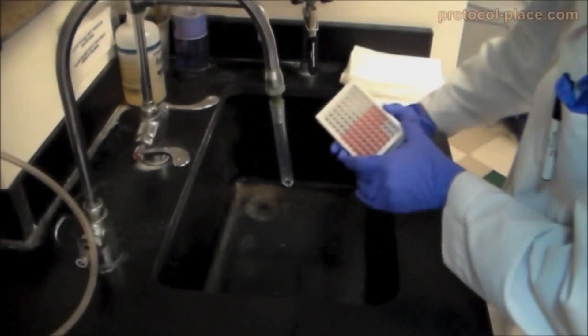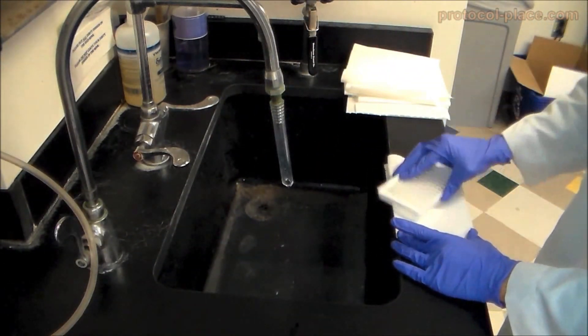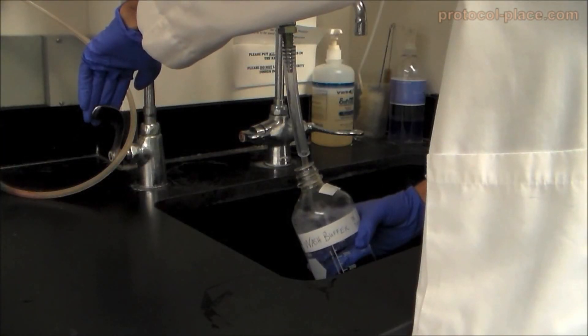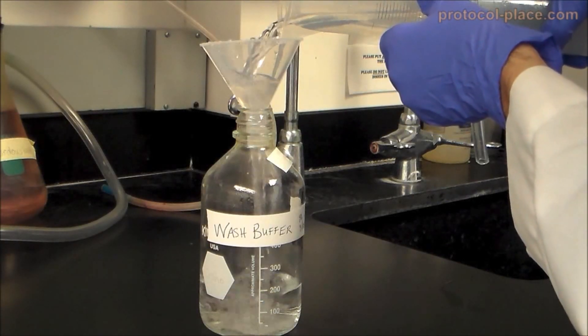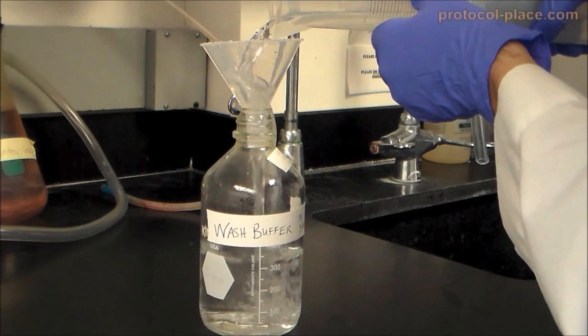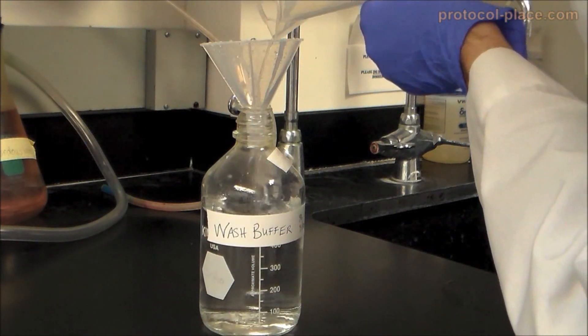When the incubation is over, the next step is to wash the ELISA plate as directed by the manufacturer. Some kits call for washing with distilled water, while others provide a bottle of concentrated wash buffer which can be easily diluted to a working concentration by combining with the appropriate volume of distilled or deionized water.